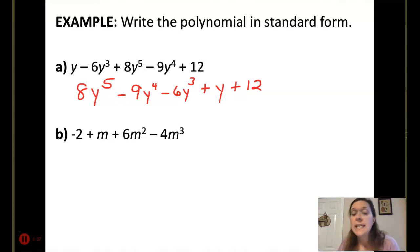For part b, we have negative 2, m, 6m squared, and negative 4m cubed. My highest degree is 3, so I'll write that one first: negative 4m cubed, followed by 6m squared, followed by plus m, and then minus 2. You should get in the habit of writing your polynomials in standard form like that.